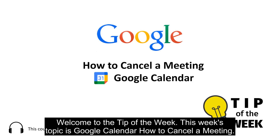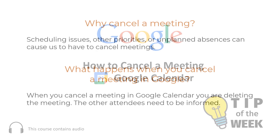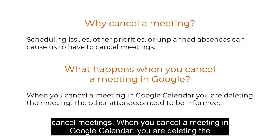Welcome to the tip of the week. This week's topic is Google Calendar: how to cancel a meeting. Scheduling issues, other priorities, or unplanned absences can cause us to have to cancel meetings.